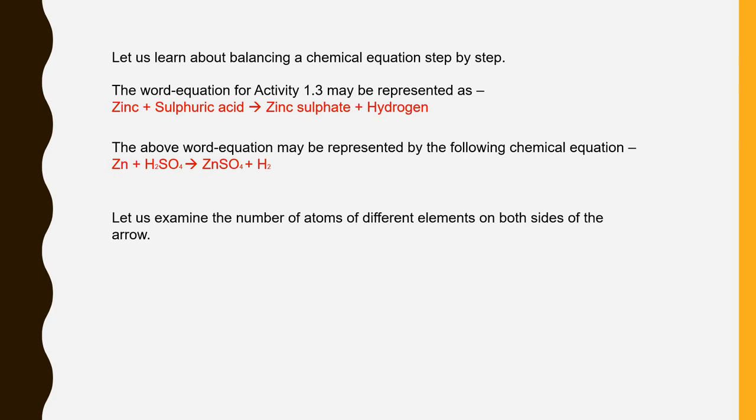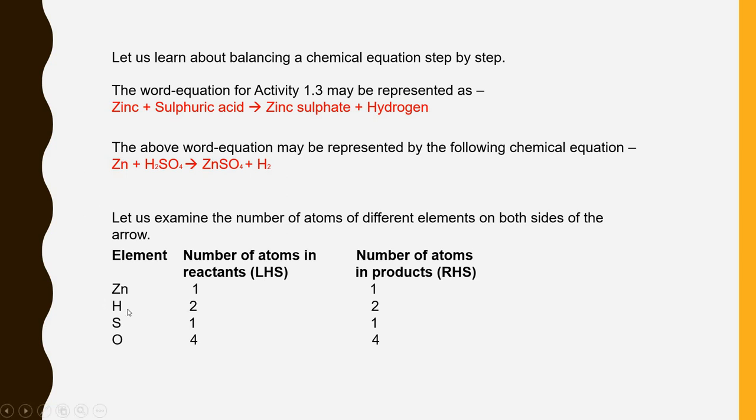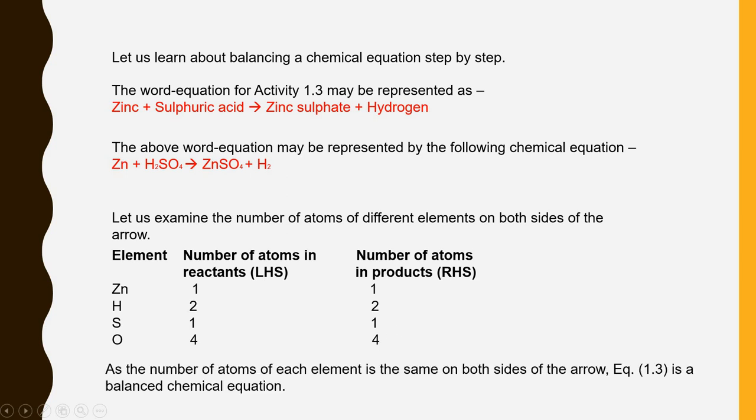Let's examine the number of atoms of different elements on both the sides of the arrow. See the elements are zinc, hydrogen, sulfur and oxygen. If I see zinc towards left hand side one atom towards right hand side one atom. Similarly hydrogen, sulfur and oxygen their numbers 2, 1, 4 is exactly same towards right hand side also 2, 1, 4. This means that the number of atoms of each element is the same on both sides of the arrow. So hence this equation is a balanced equation.